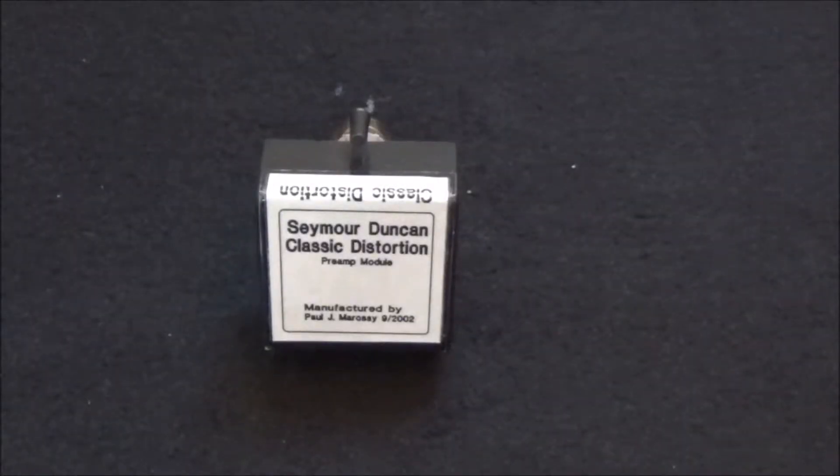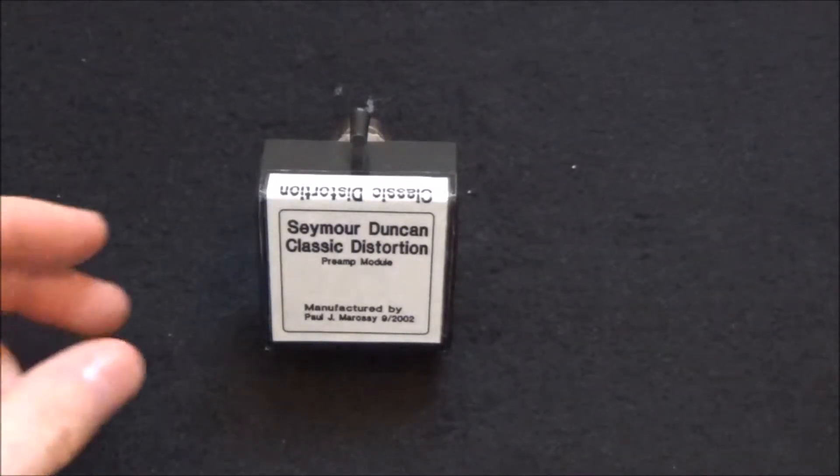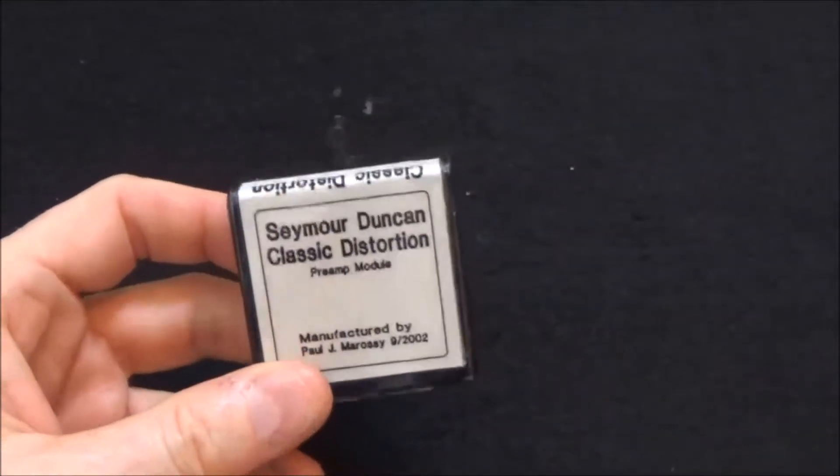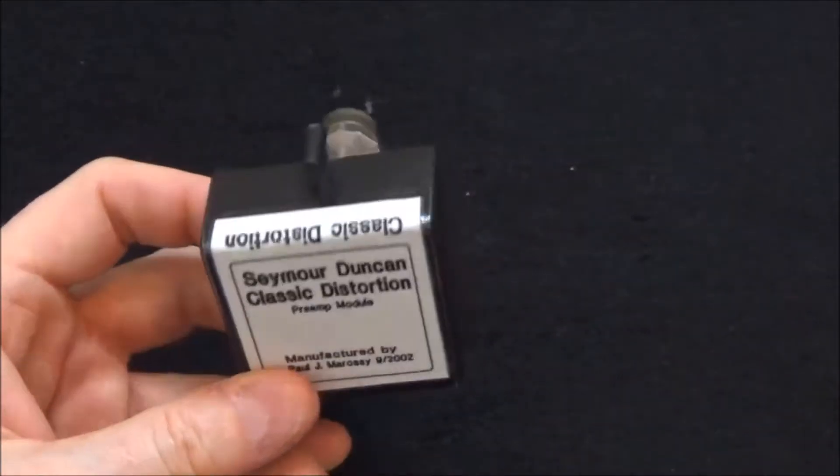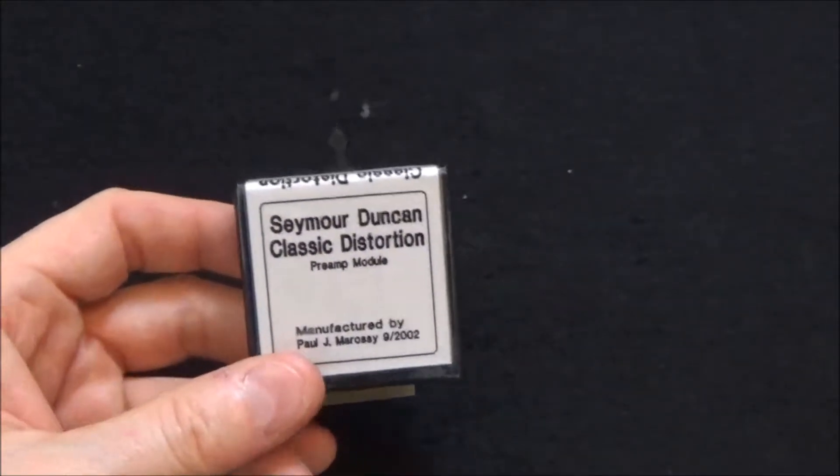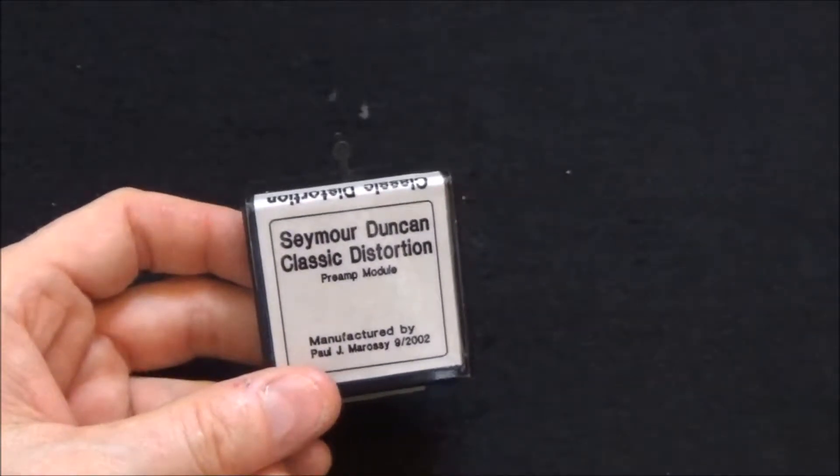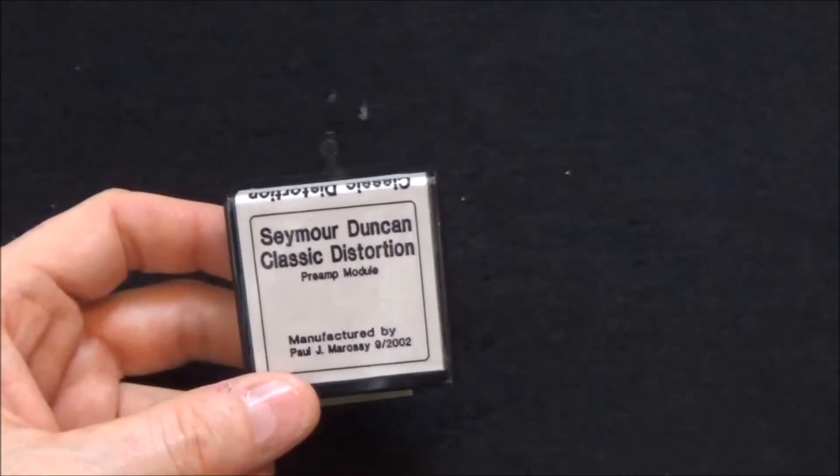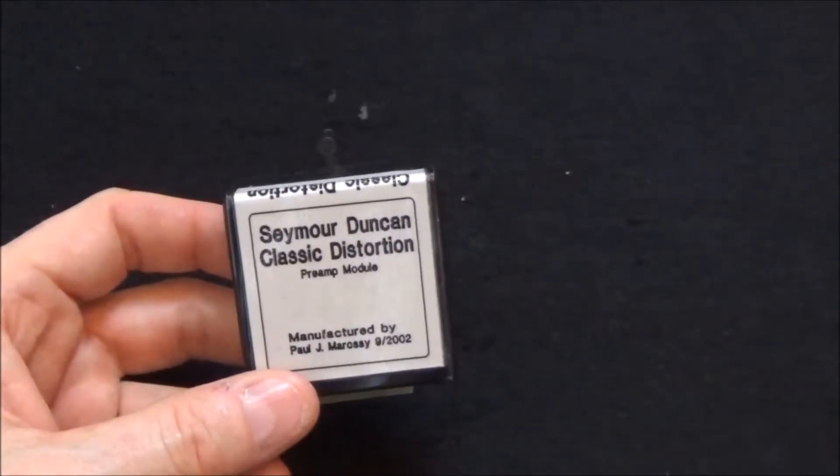Welcome to segment number eight of the Seymour Duncan convertible modules series. This one here is another rare bird—it's called the classic distortion. Basically, this is a classic module with some clipping diodes on the input.